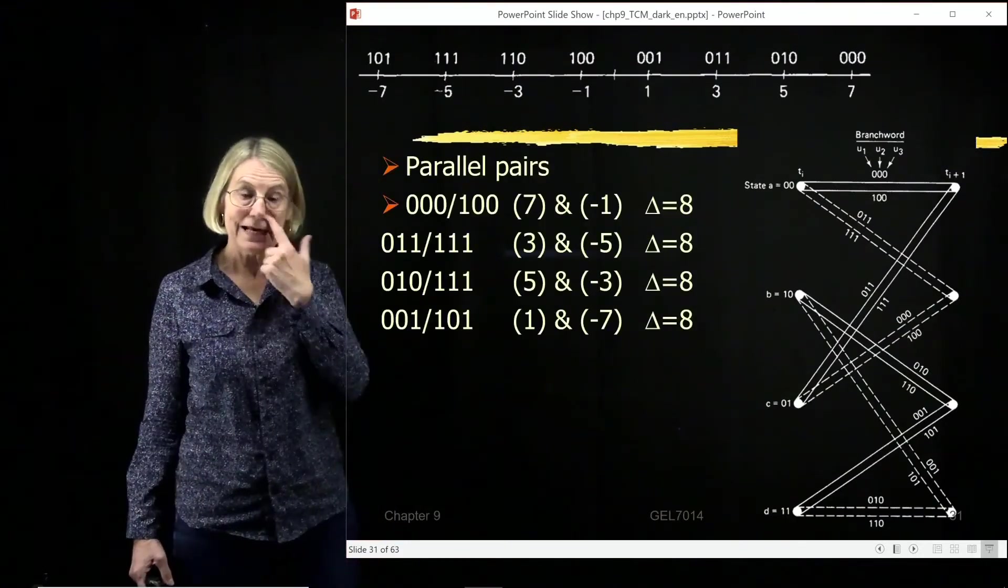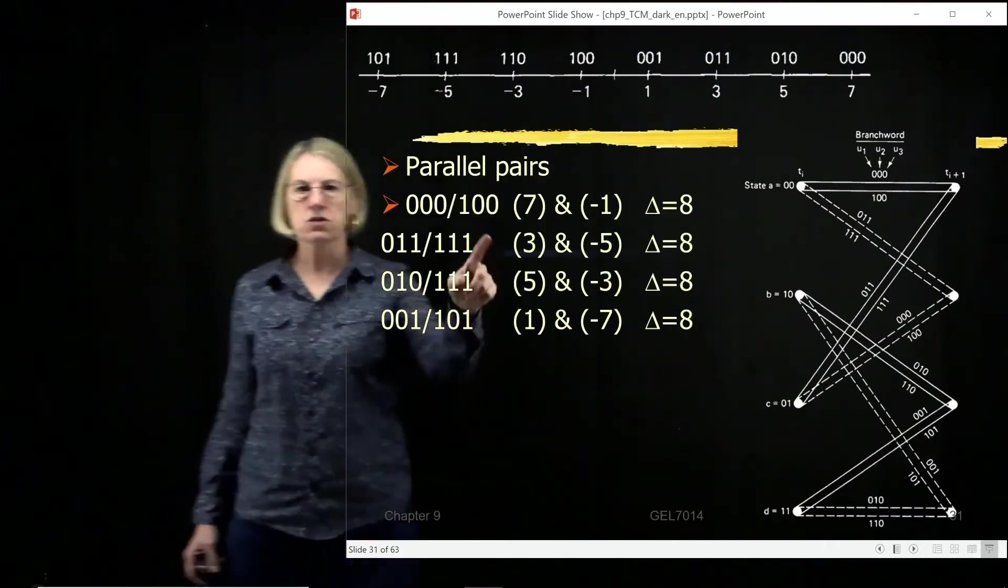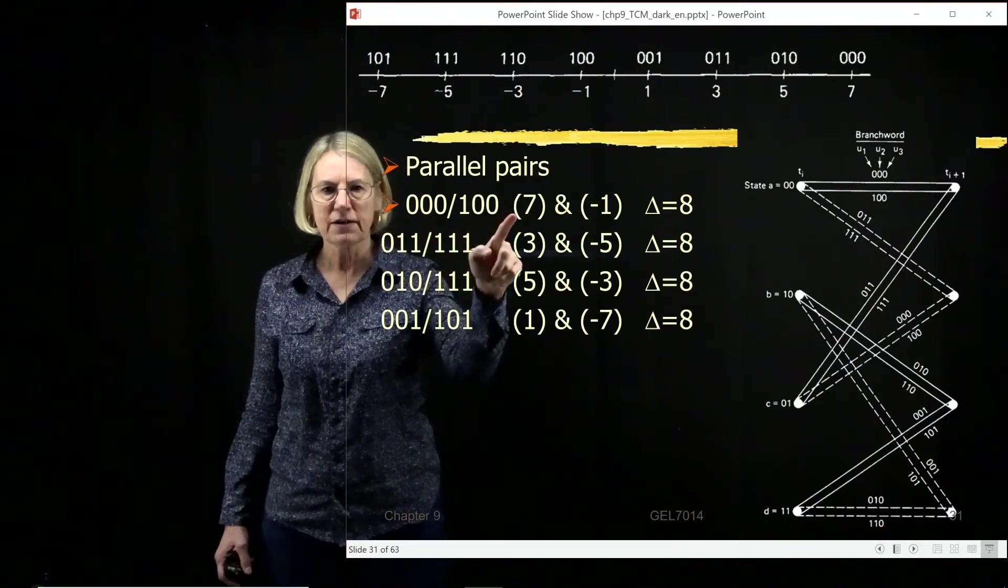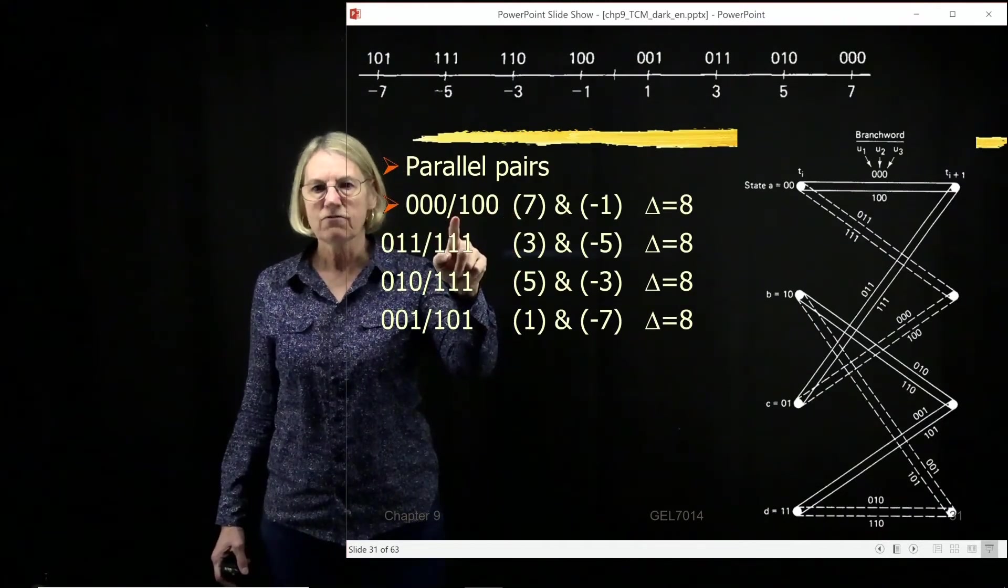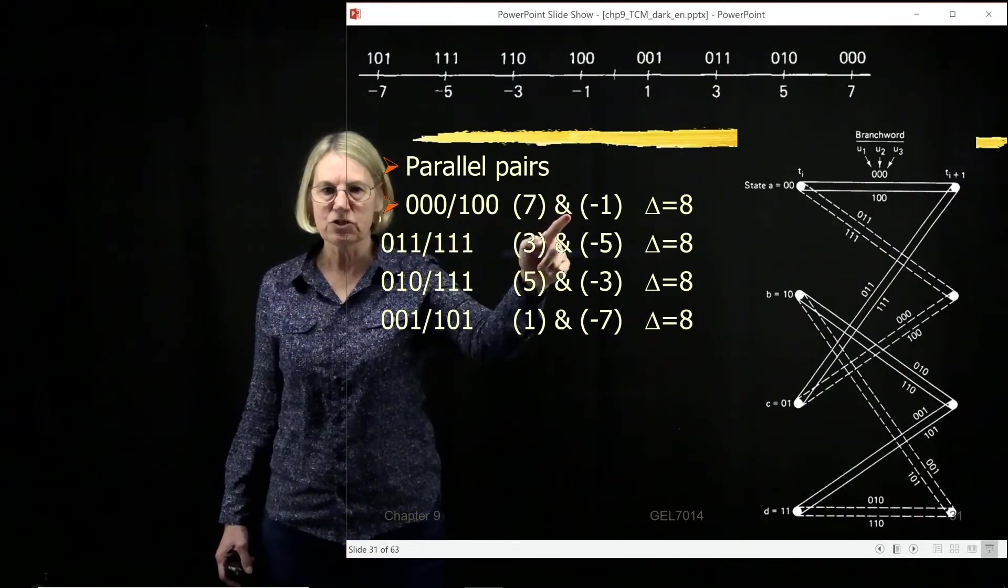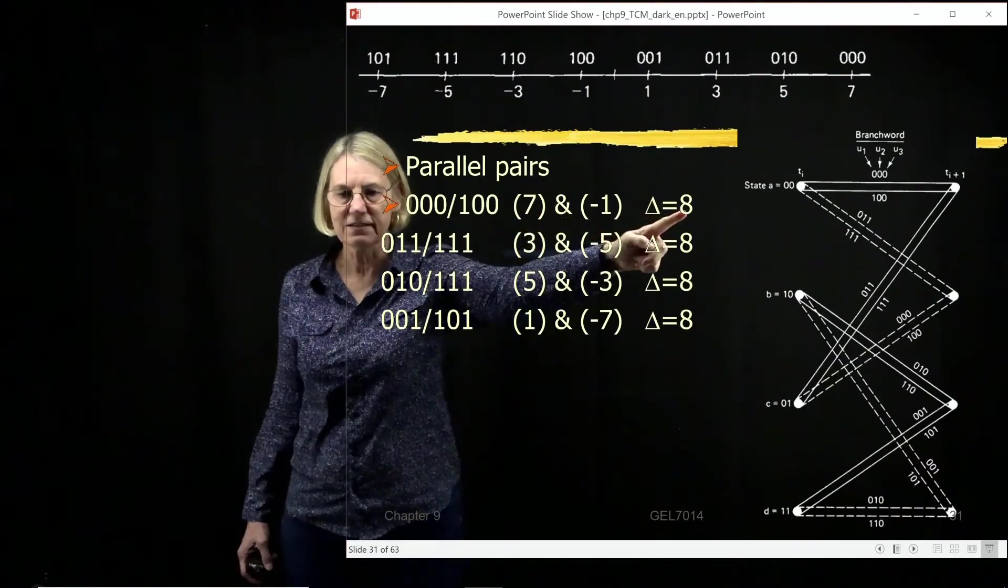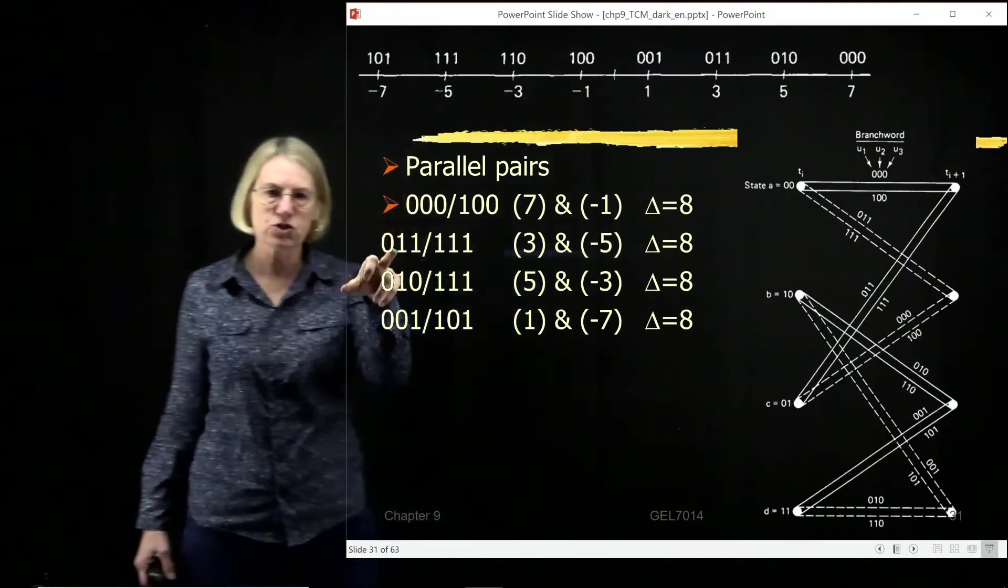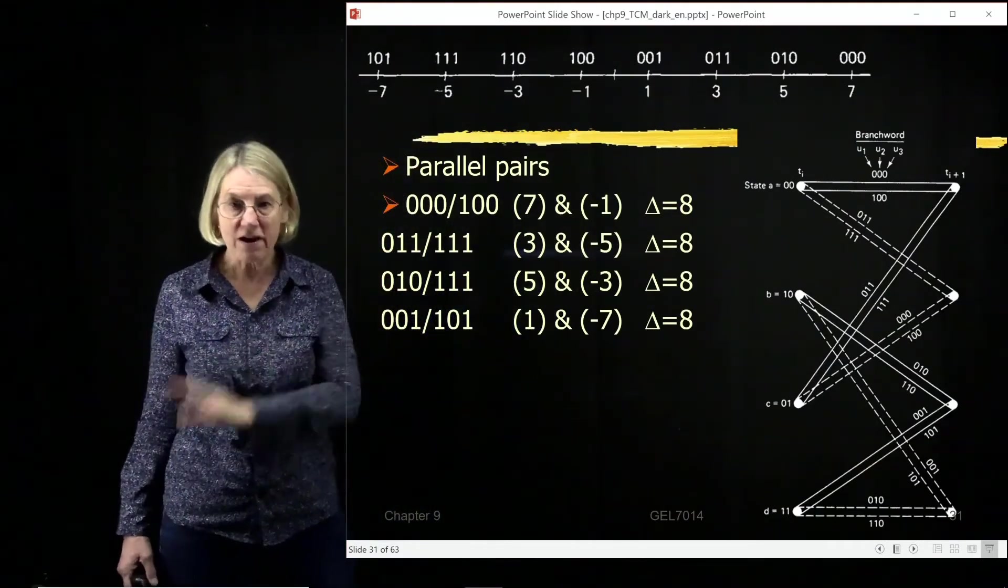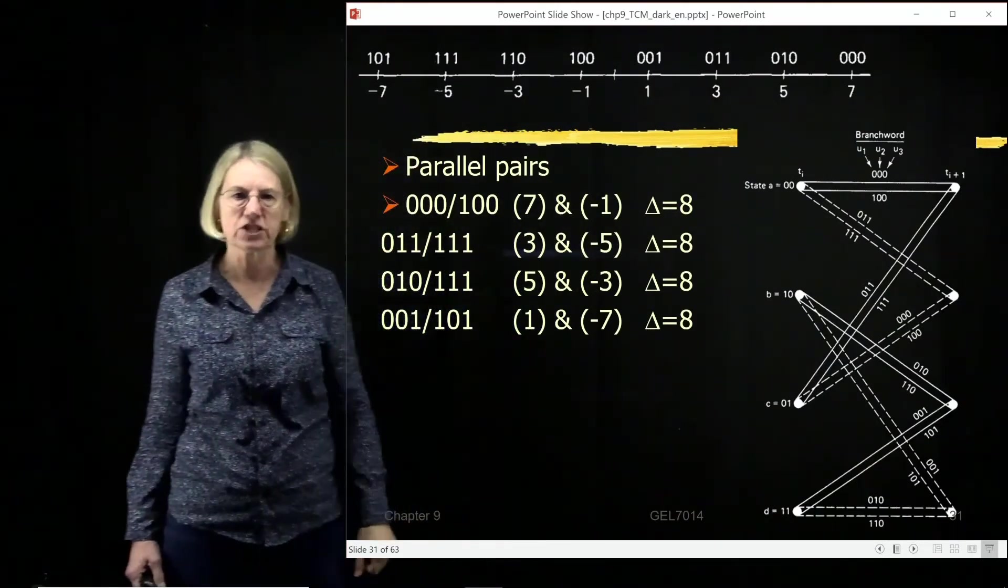Well, one characteristic is the distance between them. So the coordinates of 0, 0, that was amplitude 7. For the sequence 1, 0, 0, that was amplitude minus 1. And if I look at the distance between minus 1 and 7, that's a distance of 8. And that is true for each one of these pairs at the bottom of the set partitioning.